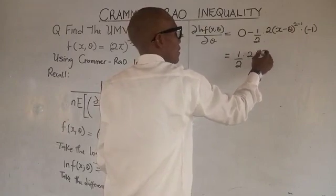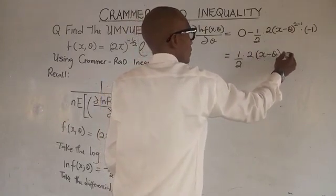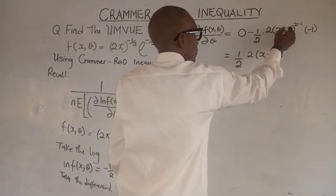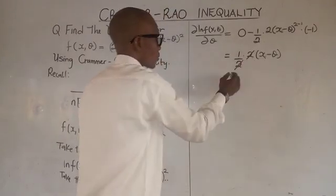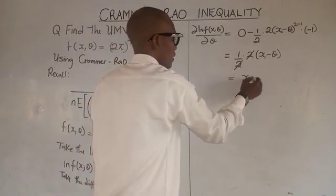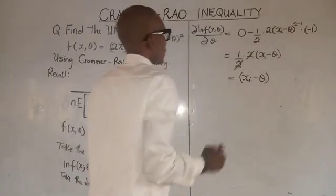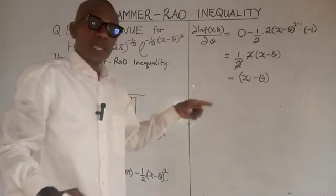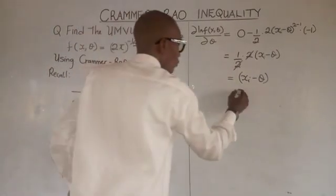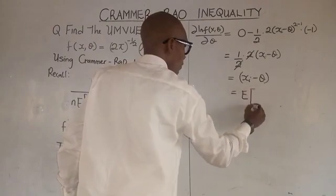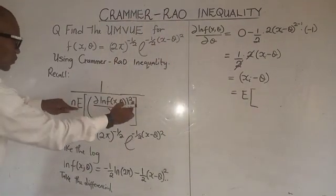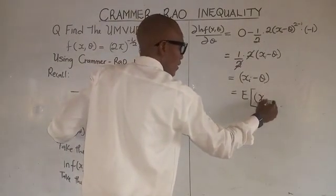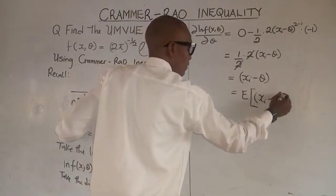Multiplied by x minus theta, this will cancel to give us x minus theta all over theta squared. The next thing to do is to take our expectation and square. So it becomes the expected value, and we are taking the square and also the expectation of this. So we now have x minus theta over theta squared.